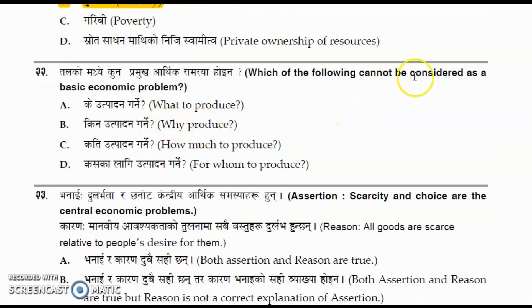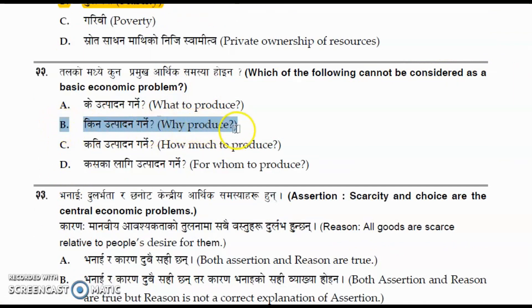Question number twenty-two: which of the following can be considered a basic economic problem? The options are what to produce, why to produce, how much to produce, and for whom to produce. The correct option is option B, why to produce.